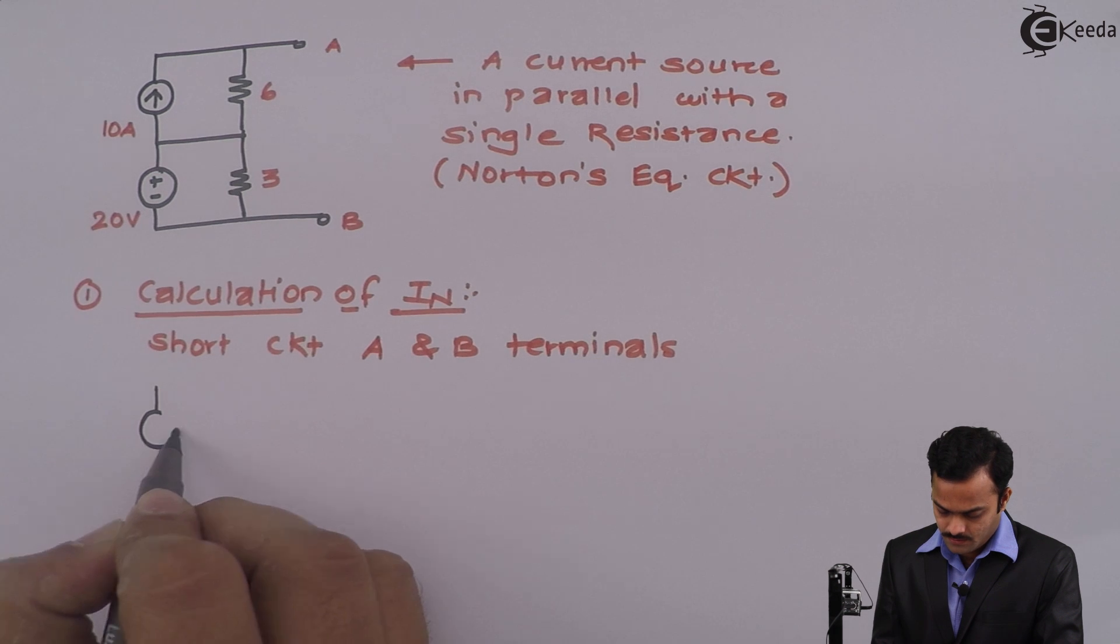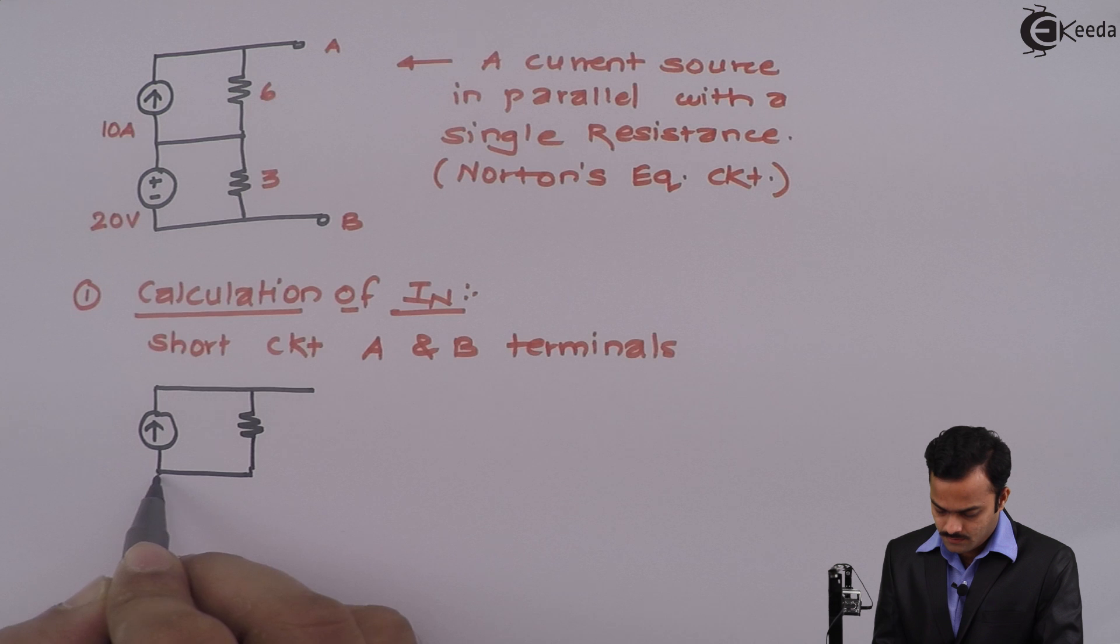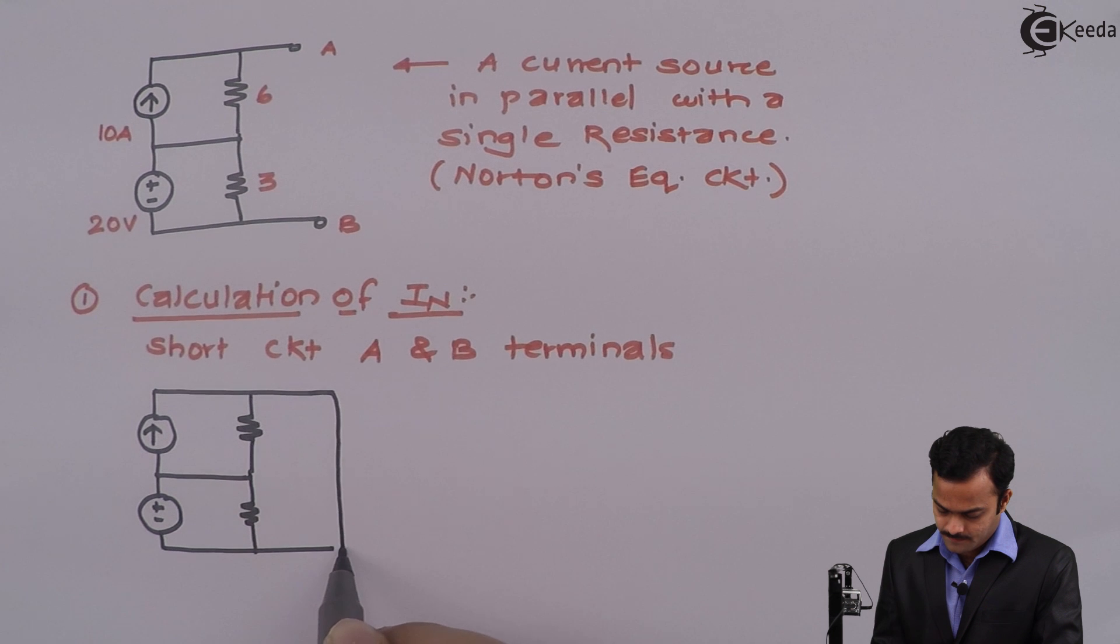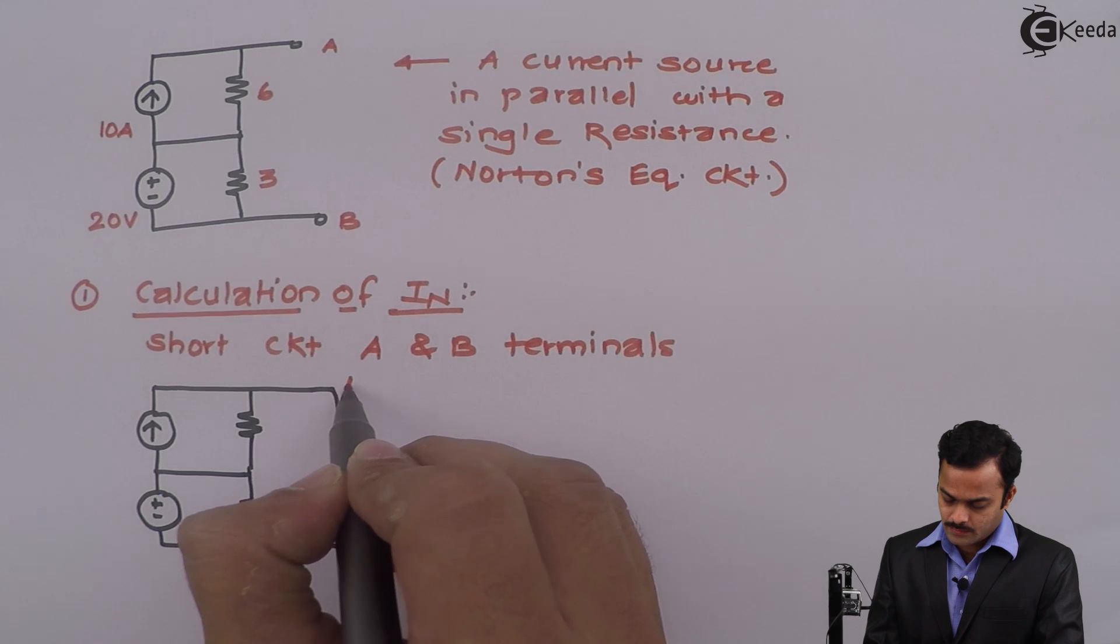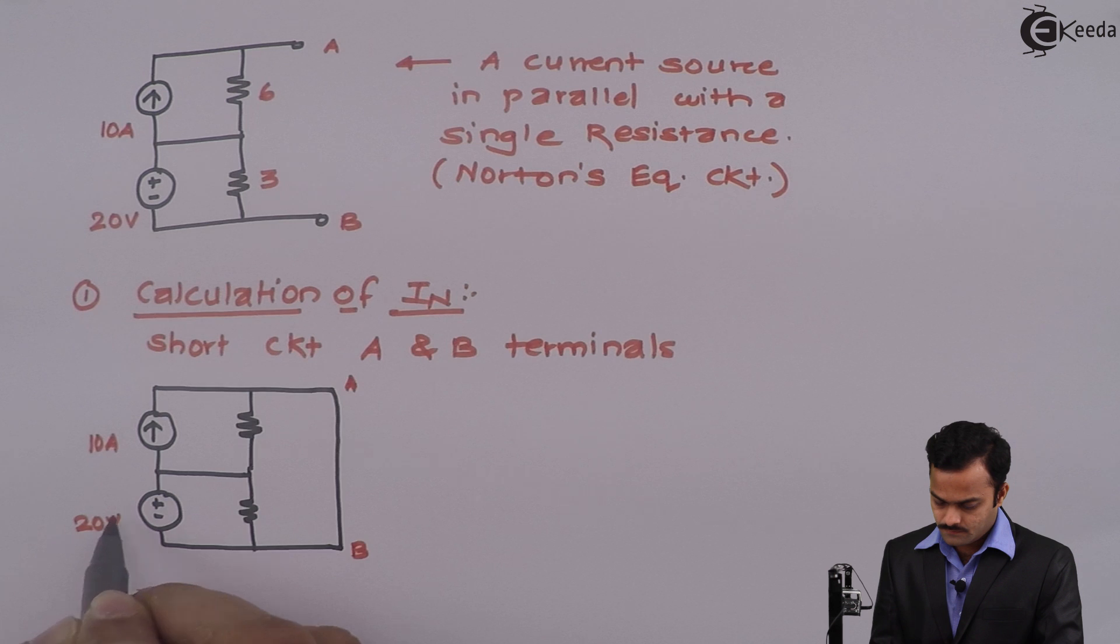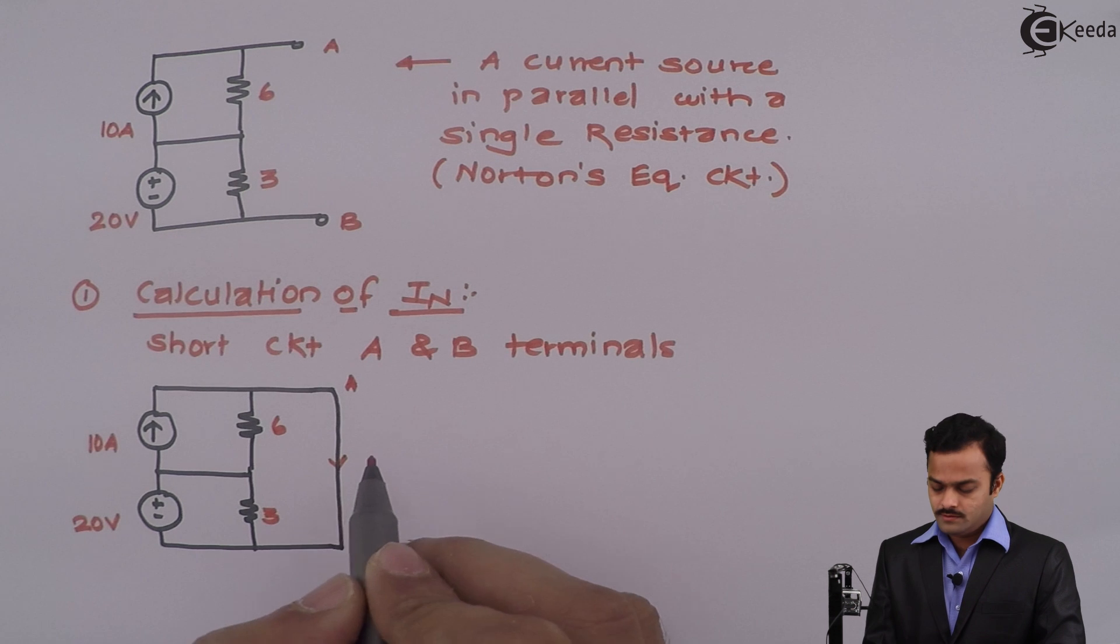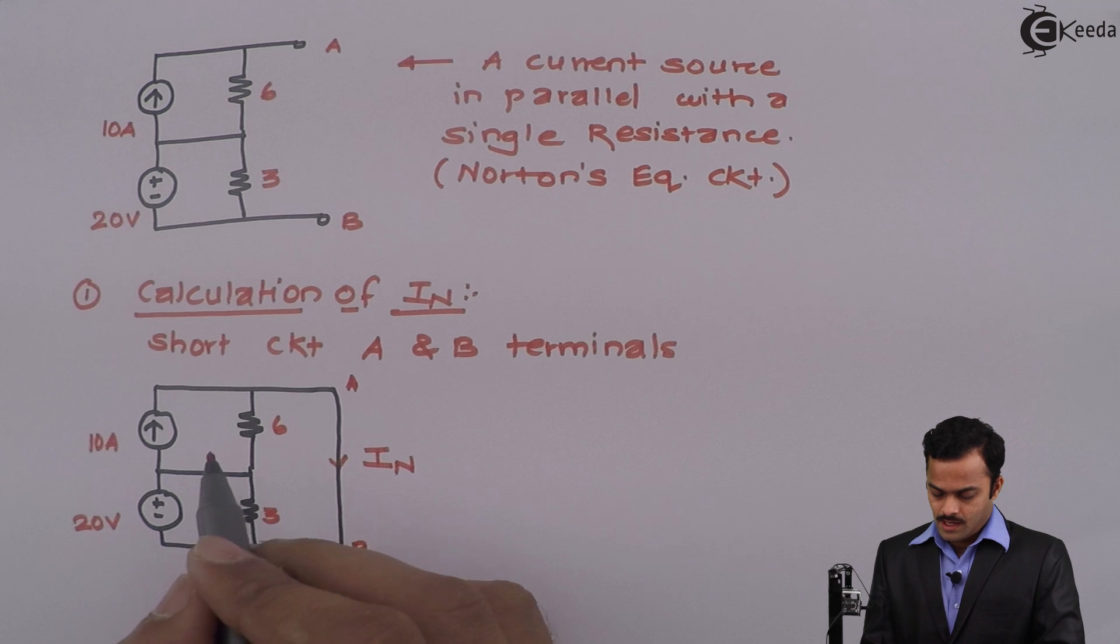That will give you a circuit where all the elements are same, just a modification is short circuiting these two terminals A and B. And I need to find out current flowing through this link which I will denote as In.